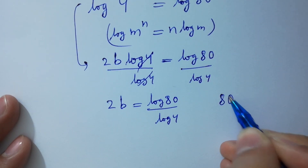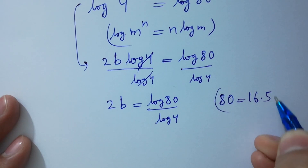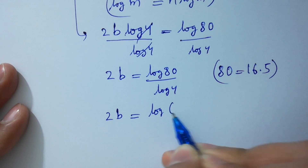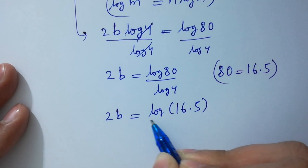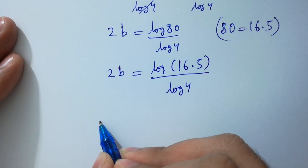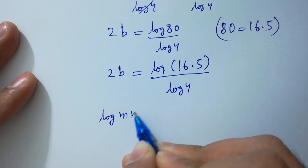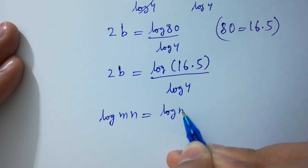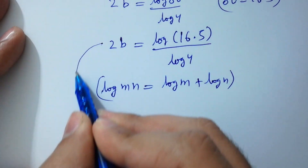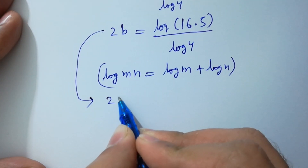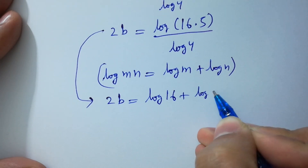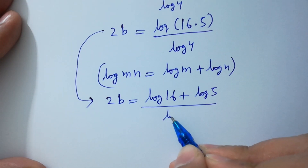Since 80 equals 16 times 5, 2B will be equal to log of 16 times 5 over log 4. This gives us log 4 by log 4 plus log 5 over log 4.